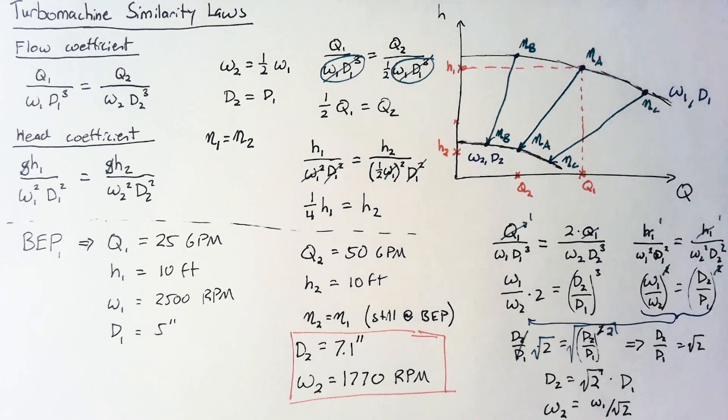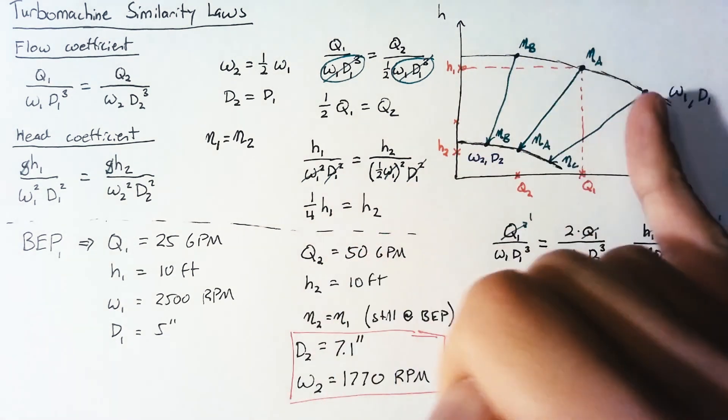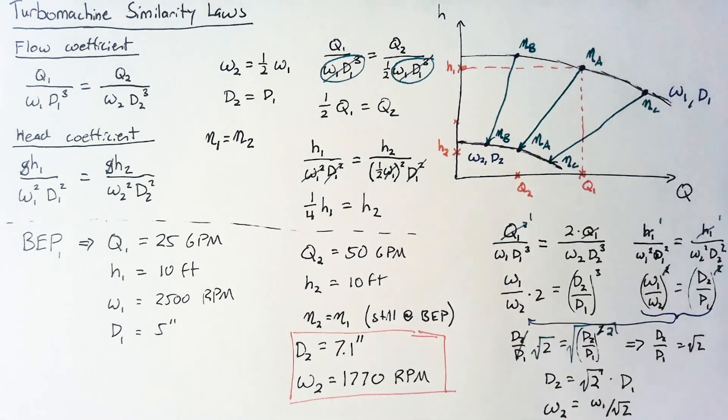So we looked at two different situations here where we might use these turbomachine similarity laws. The first of which is just simply changing our omega, changing our rotational rate or changing the size of the pump and seeing what happens to our pump curve. We can just apply these ratios to every single point on the pump curve and we have pretty good confidence that our efficiencies should stay about the same. Now if you look at manufacturer pump curves you'll see that the efficiencies change.